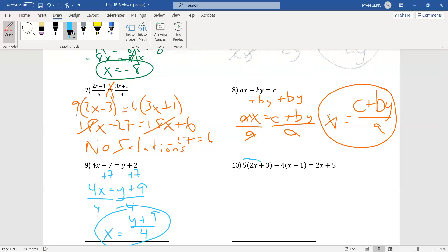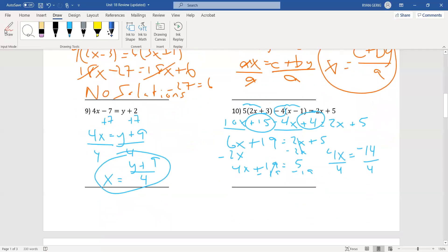Last one. Distributing again. So, 5 times 2x is 10x plus 15. That's a negative 4. So, it's negative 4x. Negative 4 times negative 1 is positive 4. A lot of people will mess up there. Be careful with that. Combining like terms. So, 10x minus 4x is 6x. 15 plus 4 is 19. Equals 2x plus 5. I'm going to get 2x over to the other side. 4x plus 19 equals 5. Subtract 19. I get 4x equals negative 14. Divide by 4. Not a good number, right? You leave it as a fraction, but always make sure that you can, if you can reduce. And I can. I can take 2 out of top and bottom. So, x is going to equal negative 7 over 2.